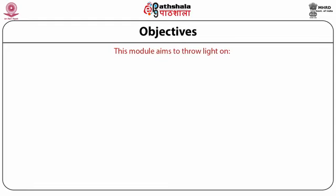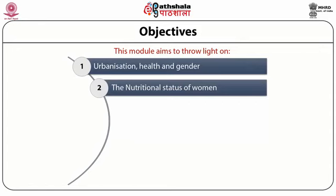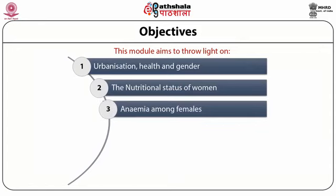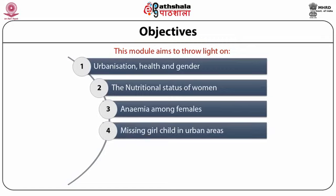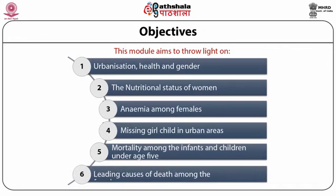This module aims to throw light on urbanization, health and gender, the nutritional status of women, anemia among females, missing girl child in urban areas, mortality among the infants and children under age 5, and the leading causes of death among the females.